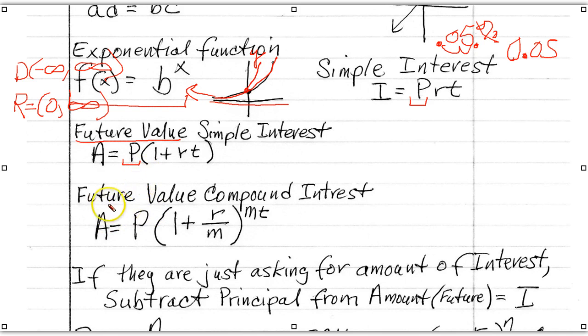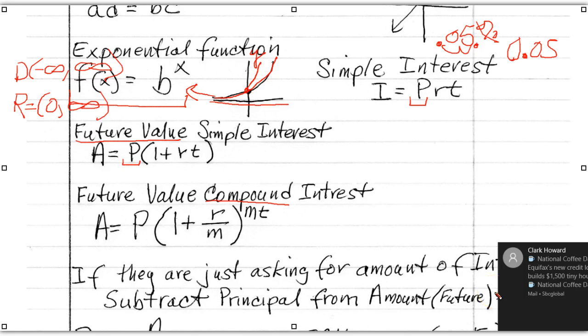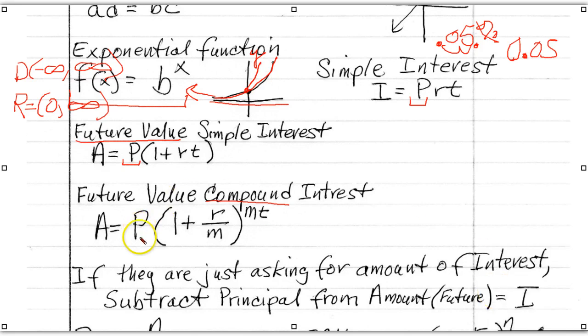Another important formula we'll use is future value, but not simple interest now. Now it's compound interest. And this is the general formula here. So what does it involve? Well, A is the future value. P is your initial principal. And then in parentheses 1 plus the rate. And then M is the number of times it's compounded each year.